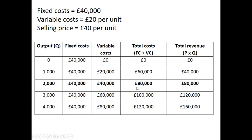It's quite easy to see from this that the break-even level of output is 2,000 units. At that point, fixed costs plus variable costs equal £80,000 — that's our total cost — and if we sell 2,000 cricket bats at £40 per unit, that gives us total revenue of £80,000. Therefore 2,000 is what we need to sell to break even. Below that we are making a loss; above it, revenue outweighs costs and we make a profit.